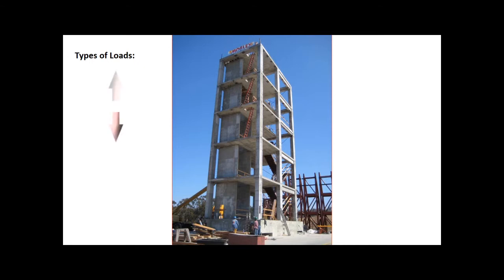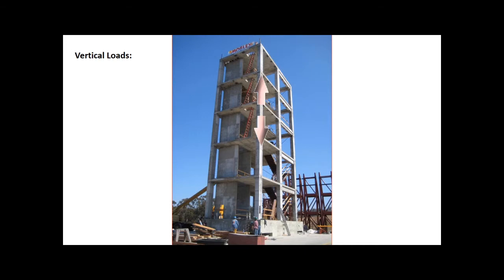Loads that are applied on structures can be divided into two general categories. Vertical loads, the most common of which are those induced by gravity, and lateral loads, which are often induced by wind or the inertial component of earthquakes. These gravity loads consist of the weight of the building itself, also known as the dead load, as well as the weight of other temporary components inside the building, such as the occupants, equipment, furniture, and utilities. These temporary vertical loads are referred to as live loads.